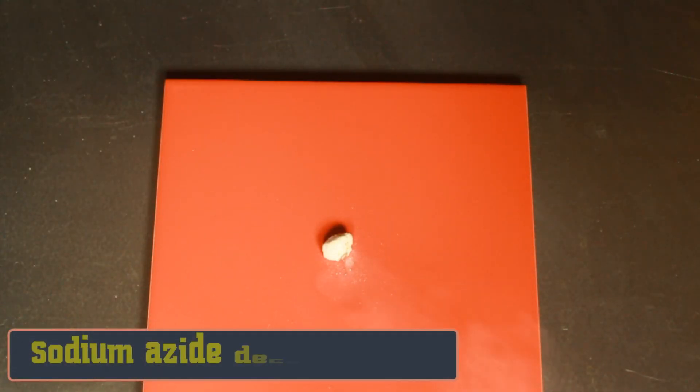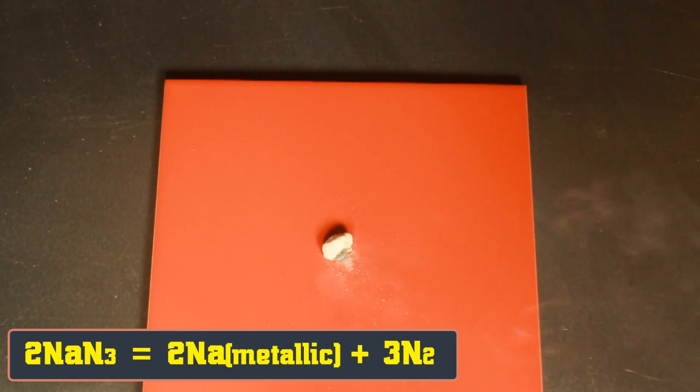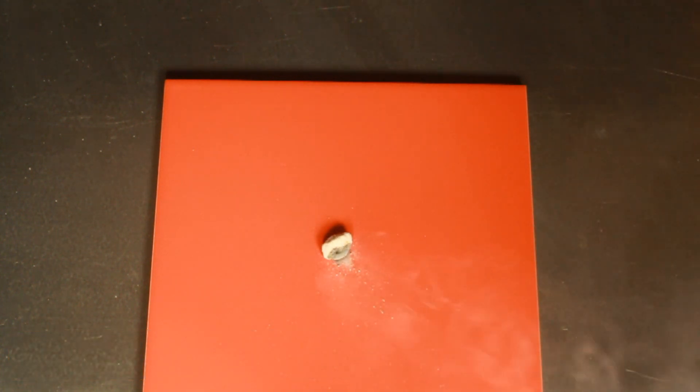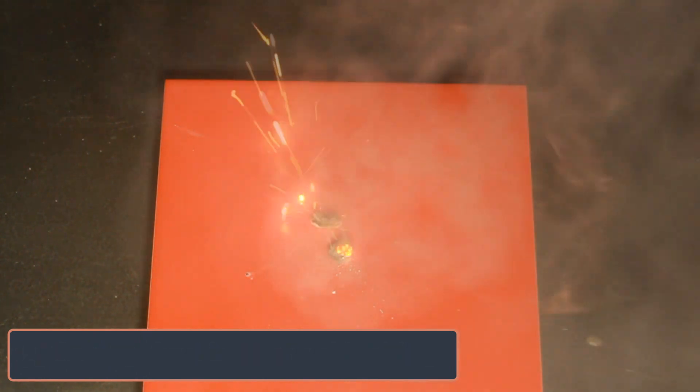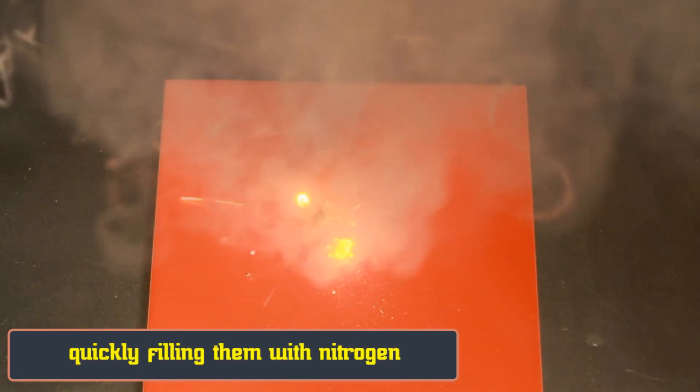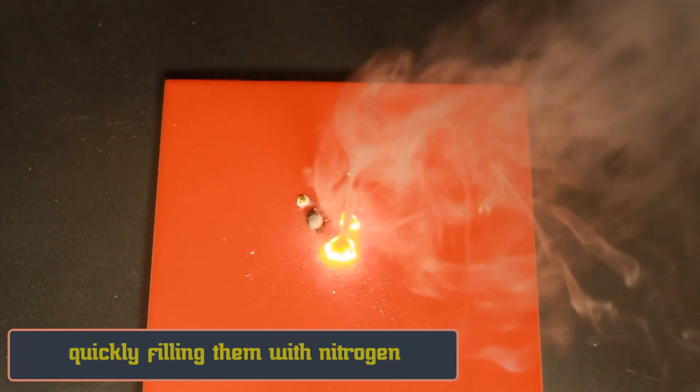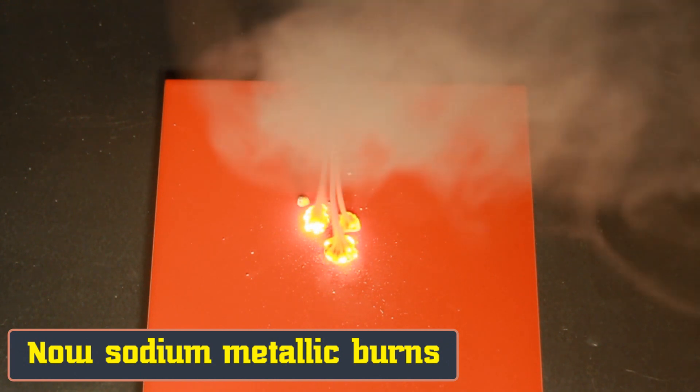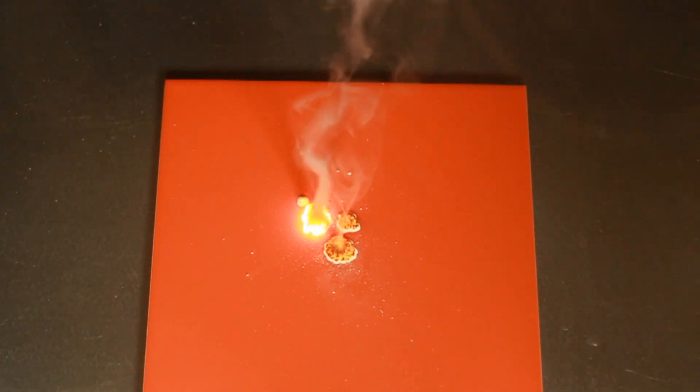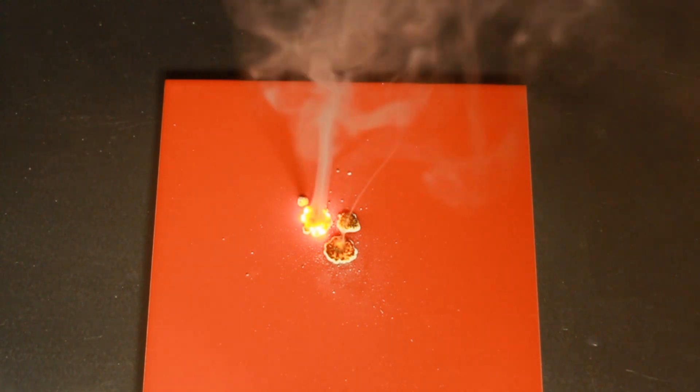Right now you can see it on an example with sodium azide. Let's look at this reaction closer and see how the metallic sodium forms.